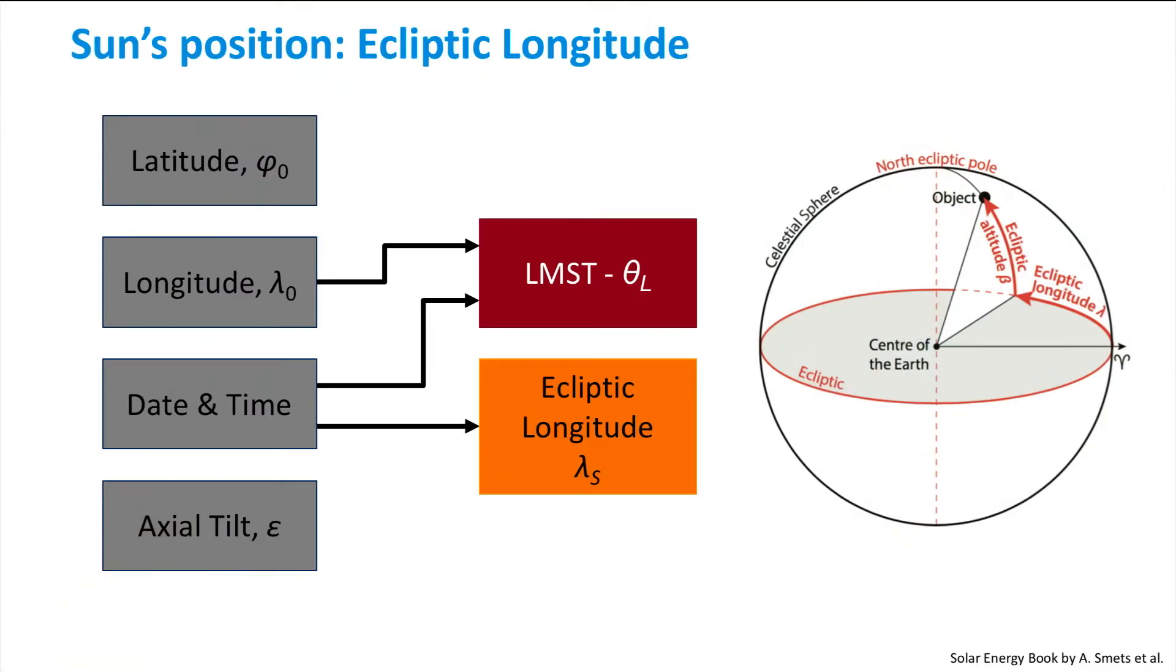In the orange box of the flowchart, the ecliptic longitude of the Sun is computed, as depicted on the right-hand side. Remember that the ecliptic is defined as the path of the Sun in the celestial sphere. Therefore, the red circumference is the path of the Sun with the Earth in the center. As a consequence, if we want to indicate the Sun position with the ecliptical coordinates, then the altitude beta of the Sun is always null.